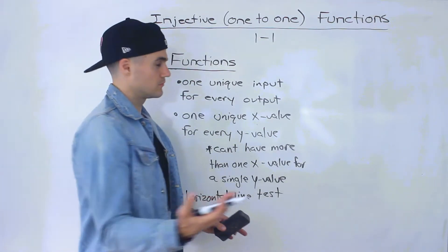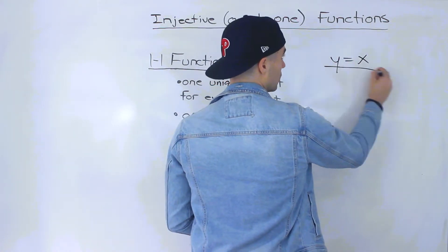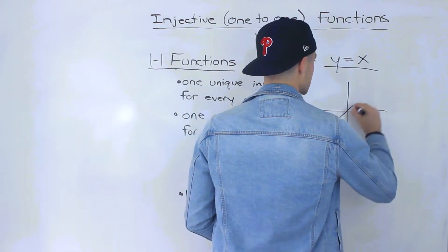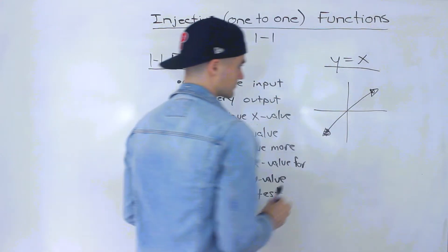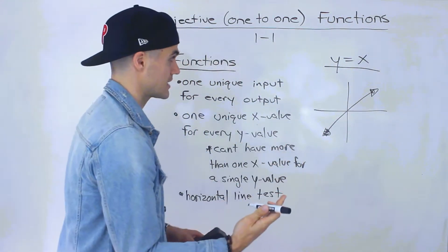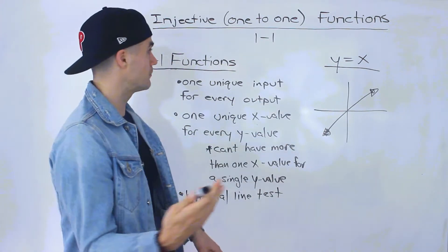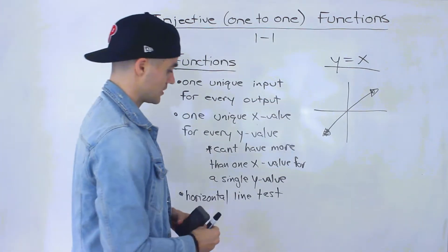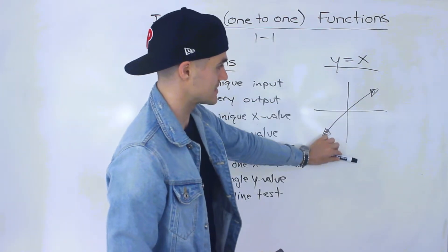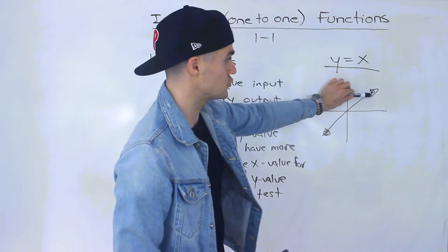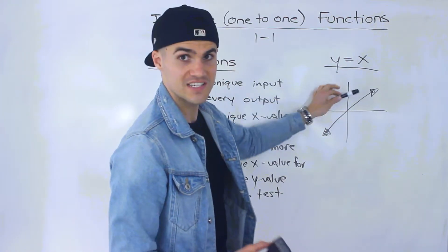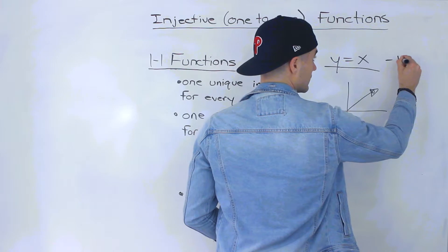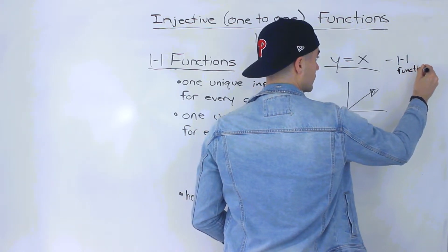Let's look at some parent functions and see whether they're one-to-one. Take y = x — it's just a straight line. It's a function that passes the vertical line test. Now running a horizontal line through it, it passes that too, because there are no two x-values for a single y-value. So y = x is a one-to-one function.